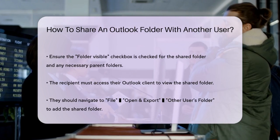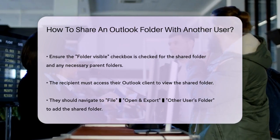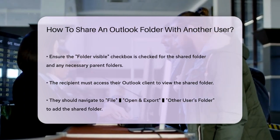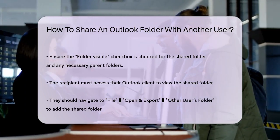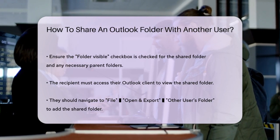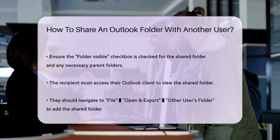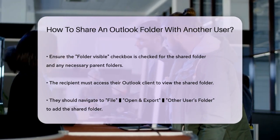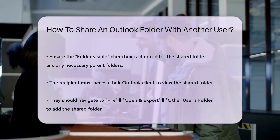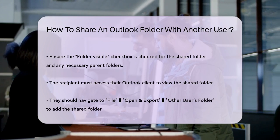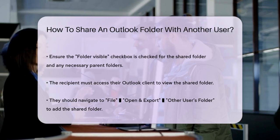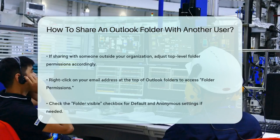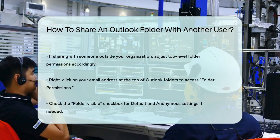To complete the process, the person you shared the folder with needs to go to their Outlook client. They should select File, Open and Export, Other Users Folder, enter your email address, and leave the folder type as Inbox. This will add the shared folder to their Outlook for them to access.